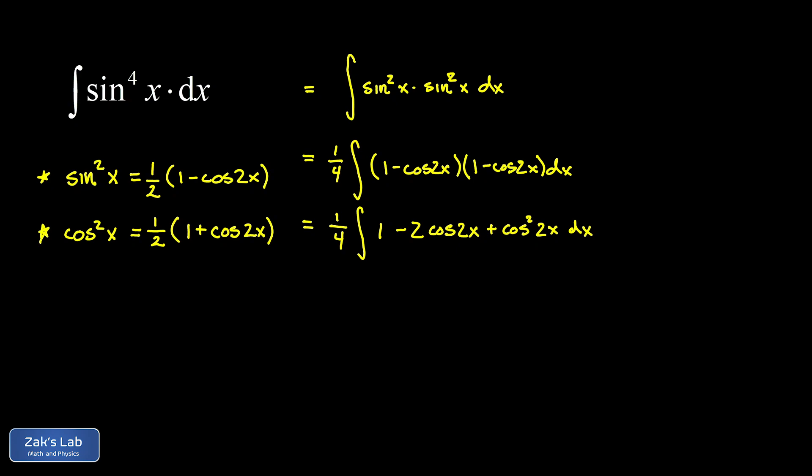We have to use another power reducing identity to knock the power of that guy down. We're going to use our second power reducing identity: cosine squared is one half times one plus cosine of twice the angle. Twice that angle is 4x.